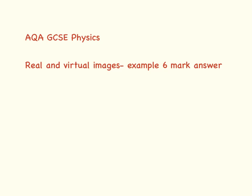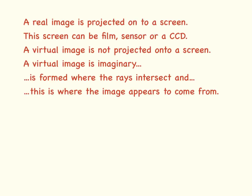After going through a large number of P3 papers, this is my model answer for a question about real and virtual images. A real image is one that's projected onto a screen — this screen can be a film, a sensor, or a CCD, which refers to a digital camera. A virtual image is not projected onto a screen; it is imaginary. It is formed where the rays intersect, and this is where the image appears to come from.